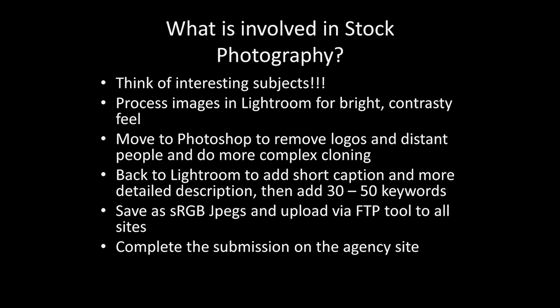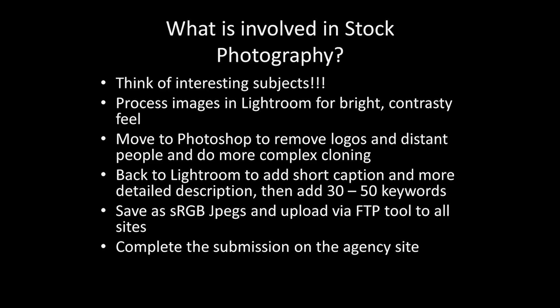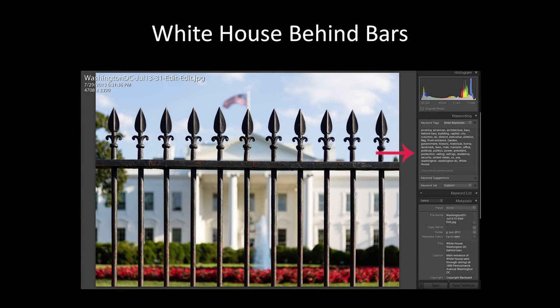So what's involved? Think of interesting subjects, process them to be bright and contrasted, remove logos and distant people if they're recognizable, then describe and caption them, save them as JPEGs, and upload to the various sites. I normally put between 30 and 40 keywords and then a description. The keywords are what you think someone would be searching for when they want an image like that. People hate keywording and describing, but a photograph without good keywords and description will never be found — it's sort of lost forever.